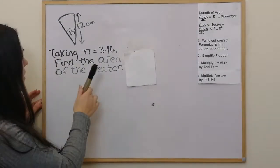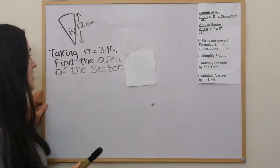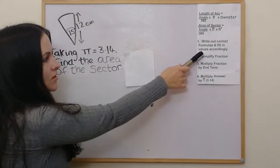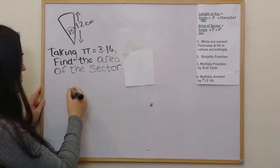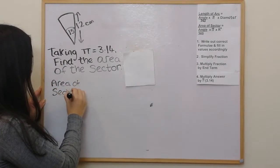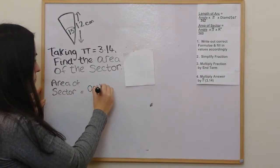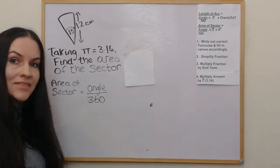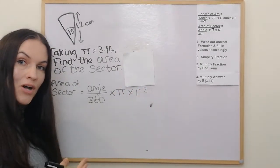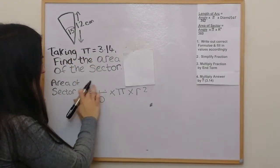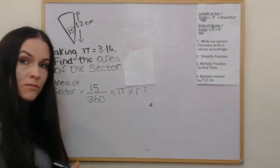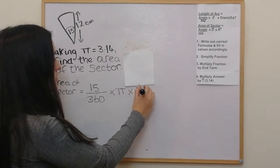In this next example, the angle is 15 degrees and the radius is 12 centimetres, and we're asked to find the area of the sector. Going through the steps: write out the formula — area of sector = angle over 360 times pi times r squared. Filling in the values: the angle is 15 and the radius is 12, so we have 15 over 360 times pi times 12 squared.